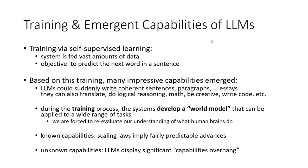That includes data analysis, which is the main focus of our conference. During the training process, the best way to understand what the models do is that they essentially develop a world model. Because if you want to predict how text continues across the entire internet corpus in an optimal way, you need to know a little about the world. As these models are trained on more and more text with more parameters and compute, they develop an ever finer world model, and when we prompt them to generate new text, they employ that world model to give an answer.